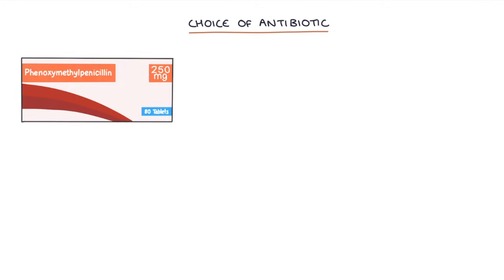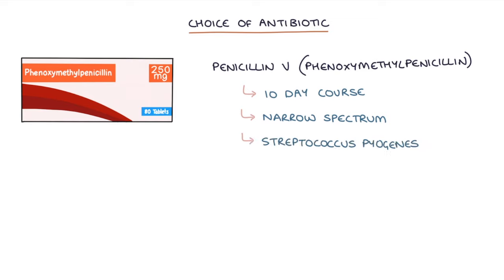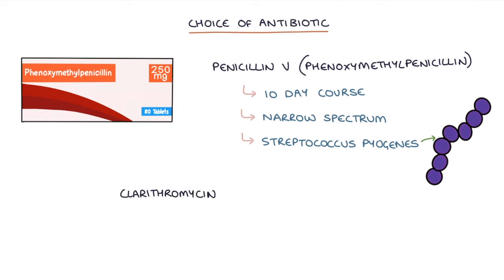Let's talk about the choice of antibiotic. Penicillin V, which is also called phenoxymethylpenicillin, for a 10-day course is typically first line. This has a relatively narrow spectrum of activity and is effective against streptococcus pyogenes, which is the most common cause. Clarithromycin is the usual first line choice in a true penicillin allergy.